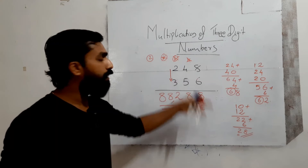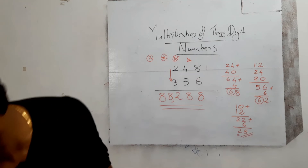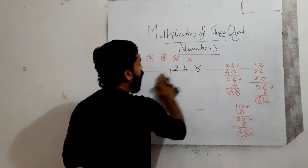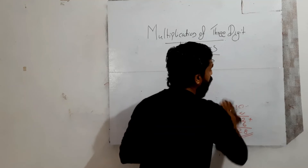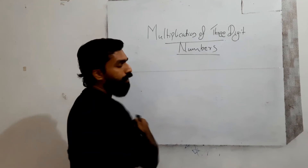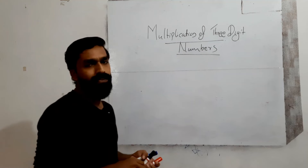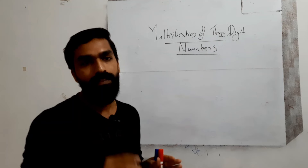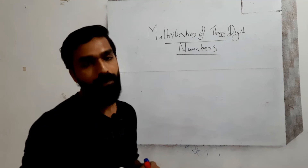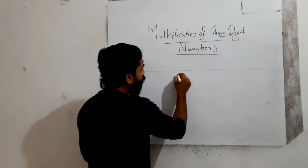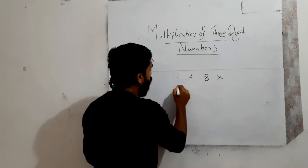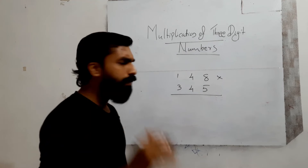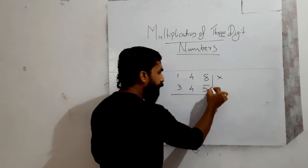One more example — the last one. You can use any other three-digit numbers and multiply yourself to get the idea of how to get the answer in one step. So: 148 into 345. First step: 8 into 5 is equal to 40. Write 0, carry over 4.